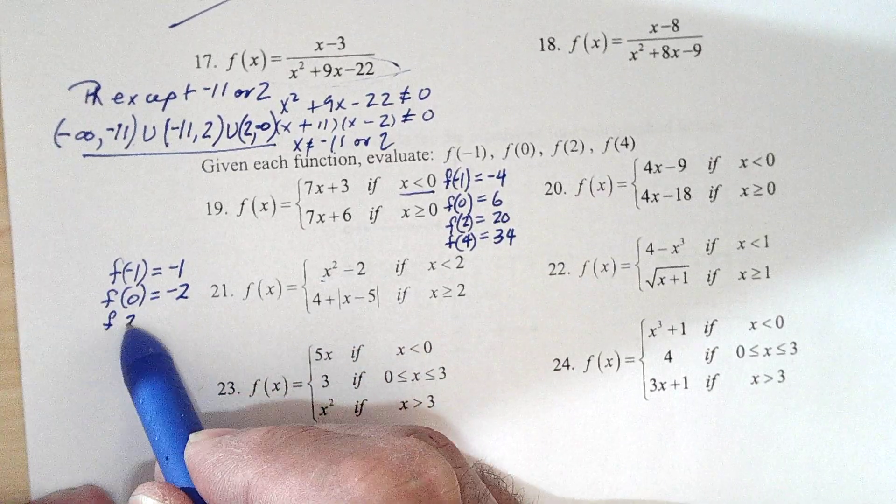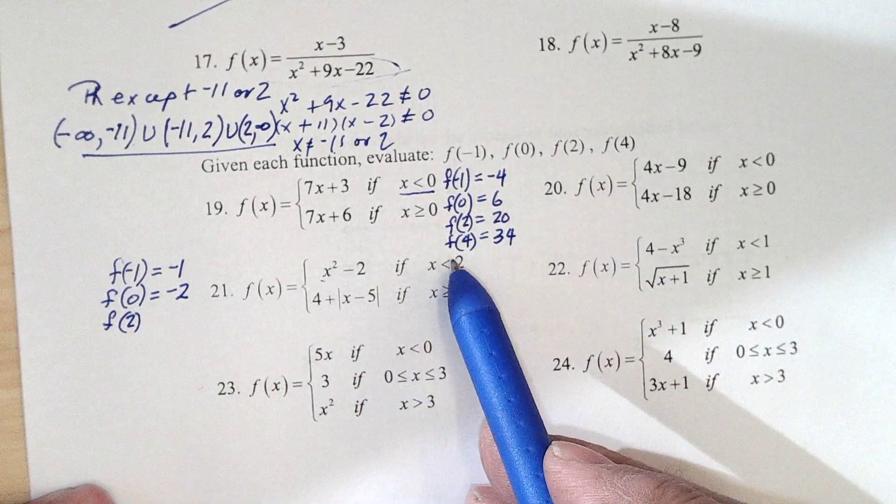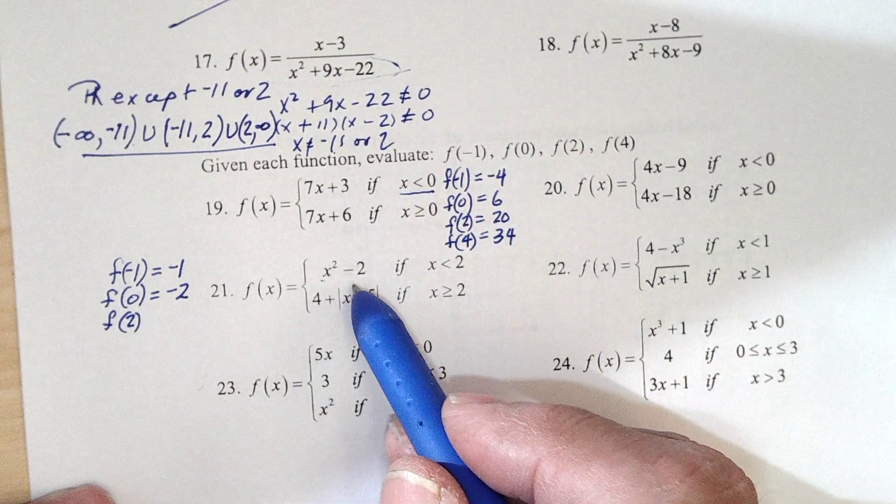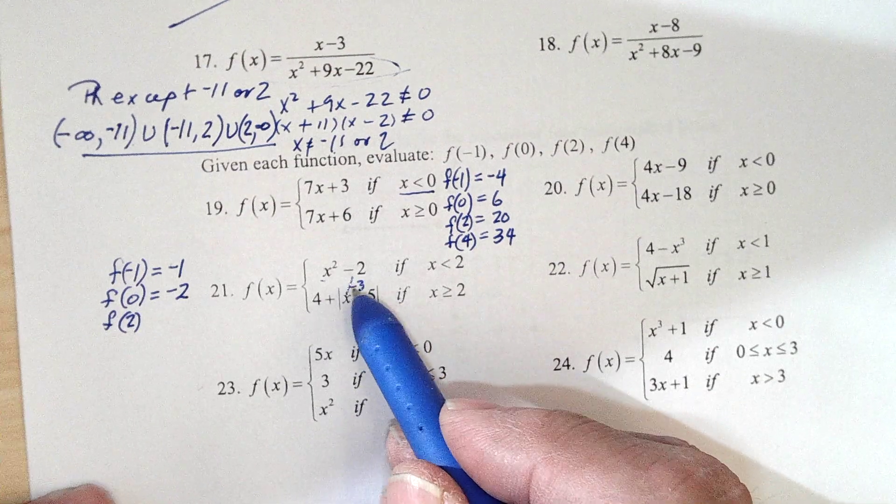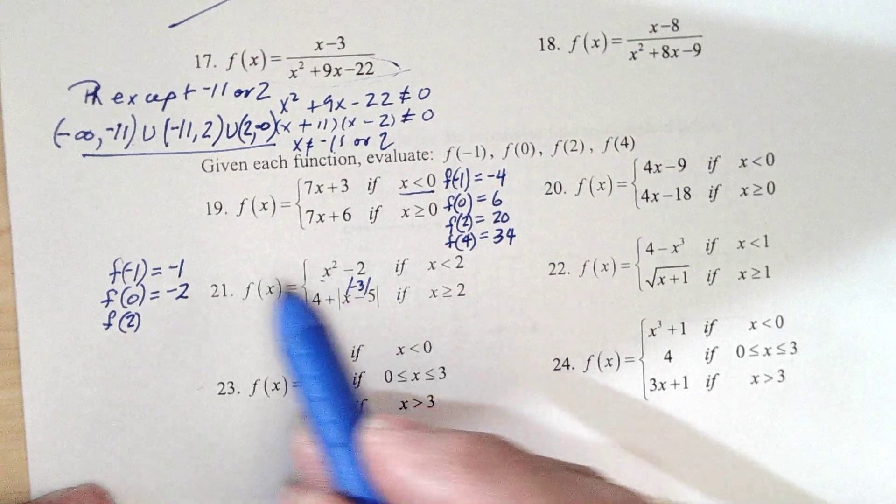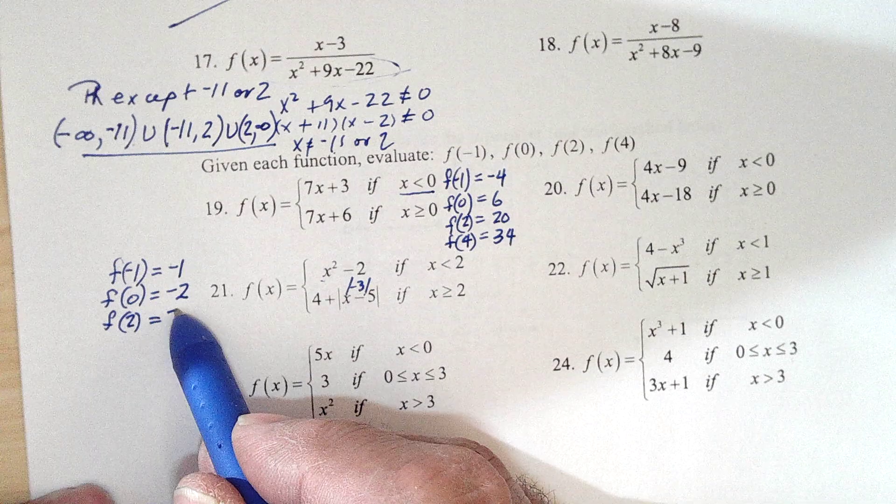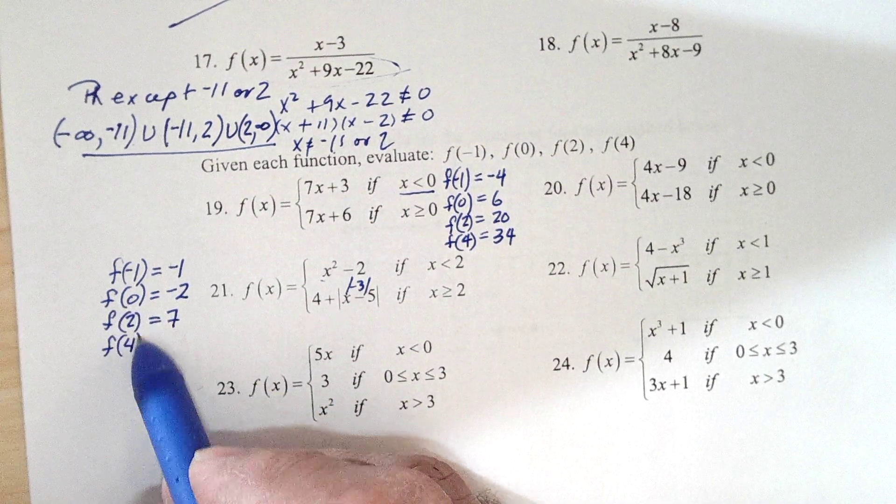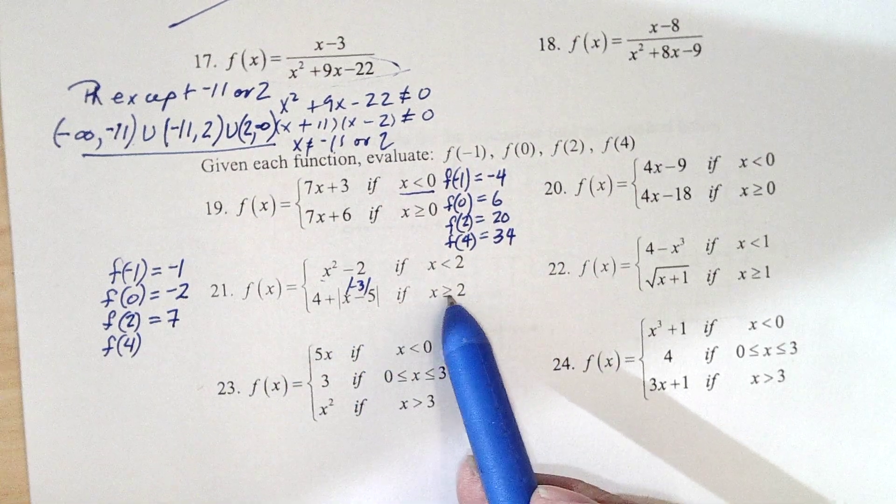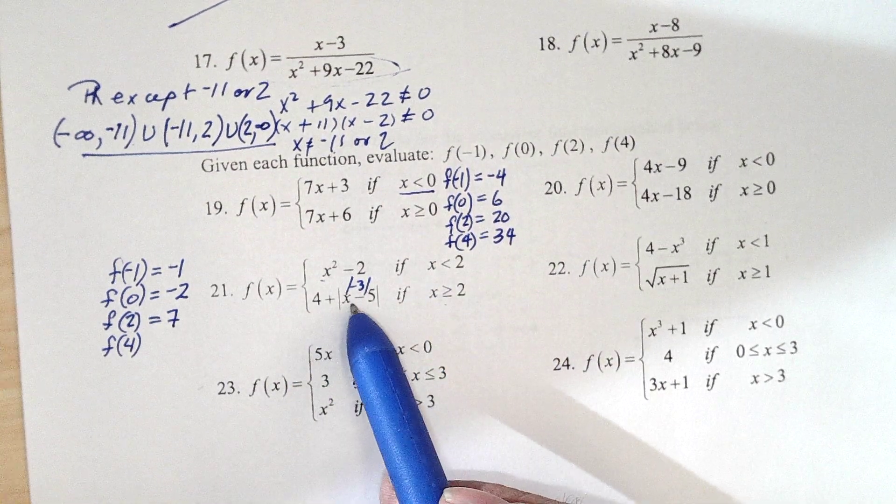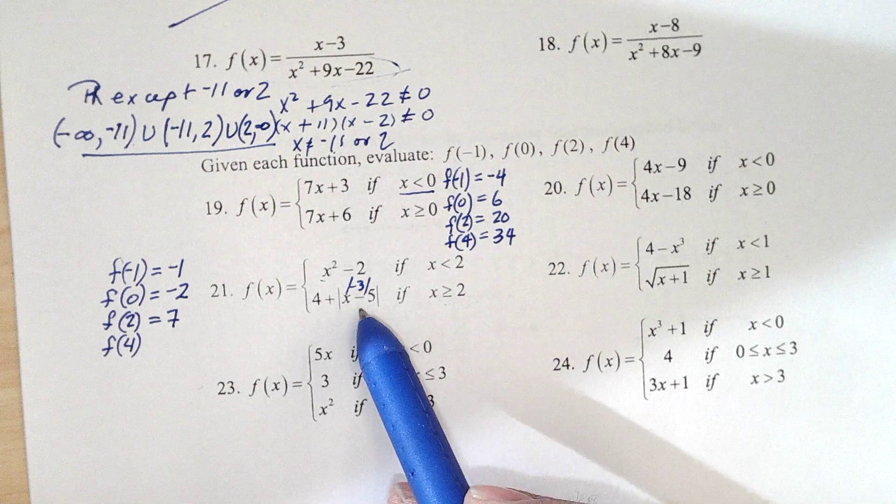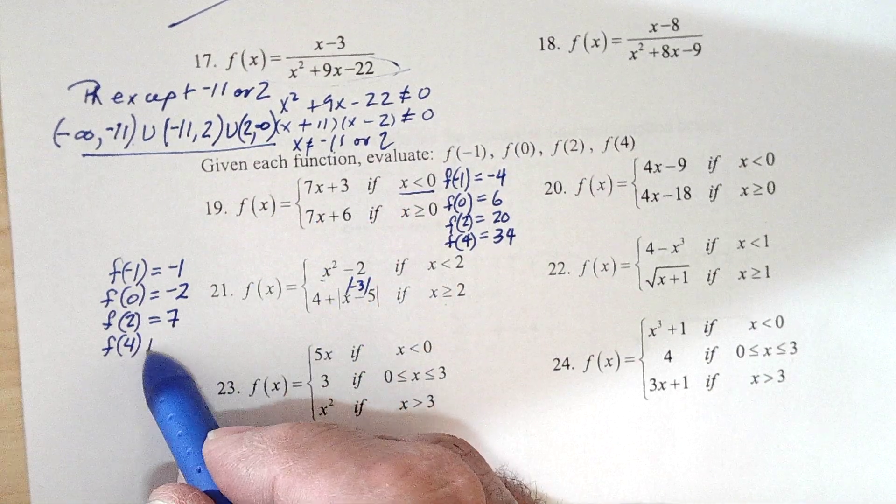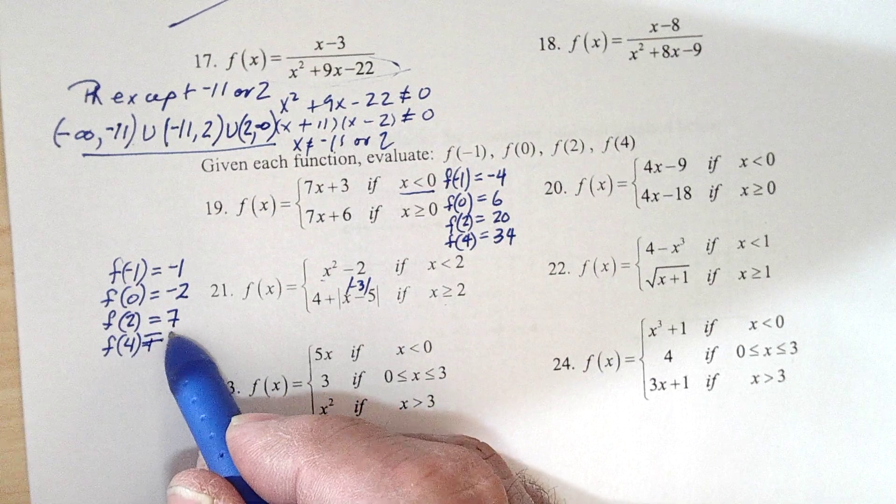f of 2, 2 is in this window, so 2 minus 5 is negative 3. The absolute value of that is 3 plus 4 is 7. And f of 4, 4 is in this window, so 4 minus 5 is minus 1. The absolute value of that would be plus 1, plus 4 is plus 5.